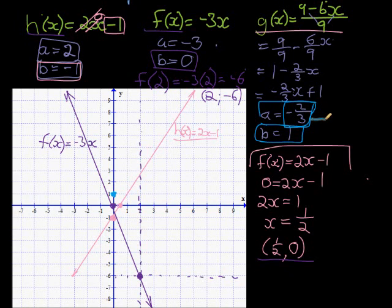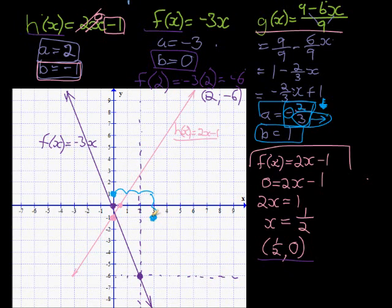And this one tells me that for every three steps I must go forward, I must go two steps down. And the reason why it's down and not up is because of the negative. So starting at this point, to find another point, I'm going to go three steps forward. So I'm going to jump 1, 2, 3 jumps forward and then two jumps down. 1, 2, down. And there would be another point.